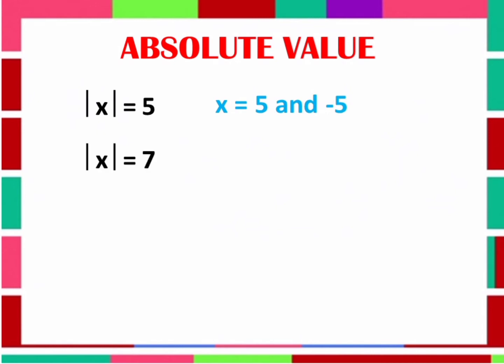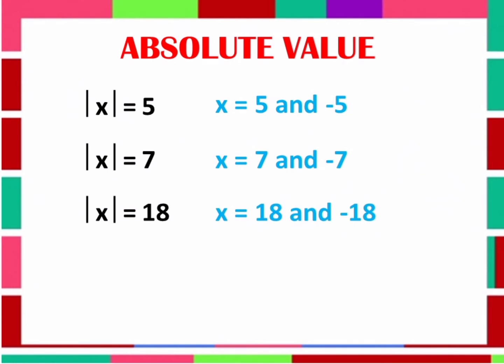Another one: the Absolute Value of x is equal to 7. Same as the first example, think of what value of x will give an Absolute Value of 7. So, the value of x is equal to 7 and negative 7. Next example: the Absolute Value of x is equal to 18. What will be the answer? Yes, x is equal to 18 and negative 18.